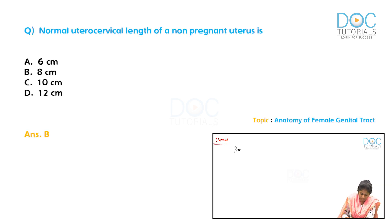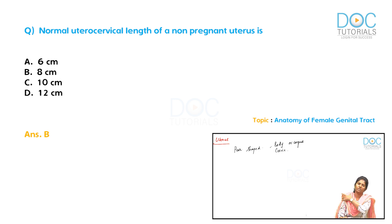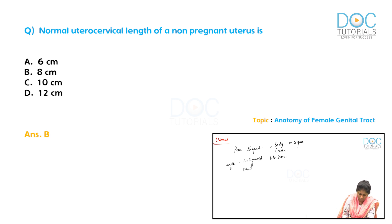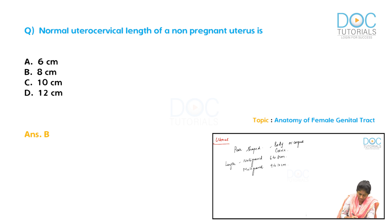The uterus is a pear-shaped organ with a body (corpus) and a cervix. The normal length for a nulligravid woman is 6 to 8 cm, and for a multigravid woman it is 9 to 10 cm. The weight of a non-pregnant uterus is 60 grams. These are important MCQ facts.